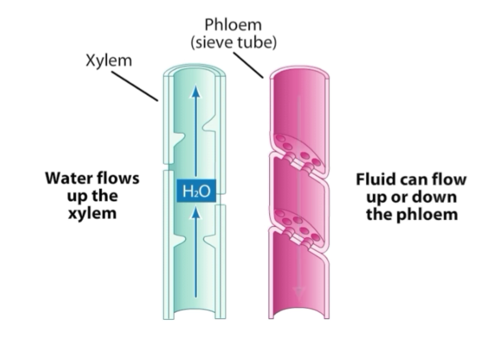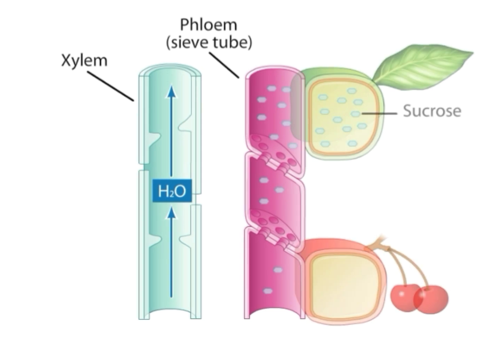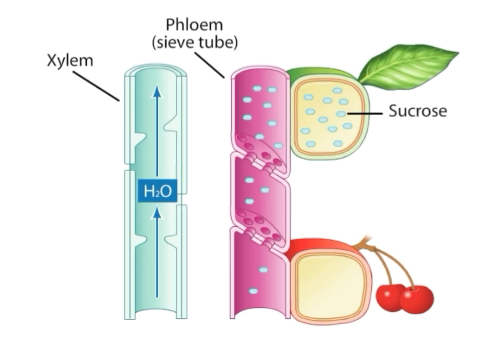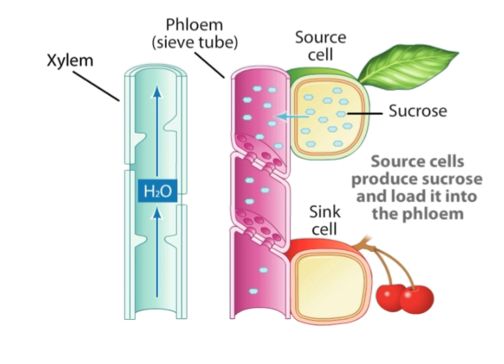Phloem flows sugars in both upward and downward directions depending on the plant's needs. Sugars travel from leaves to the sinks. For example, the leaf is considered the source, and the sink can be a fruit, which requires different carbohydrates as well as amino acids from the leaf.